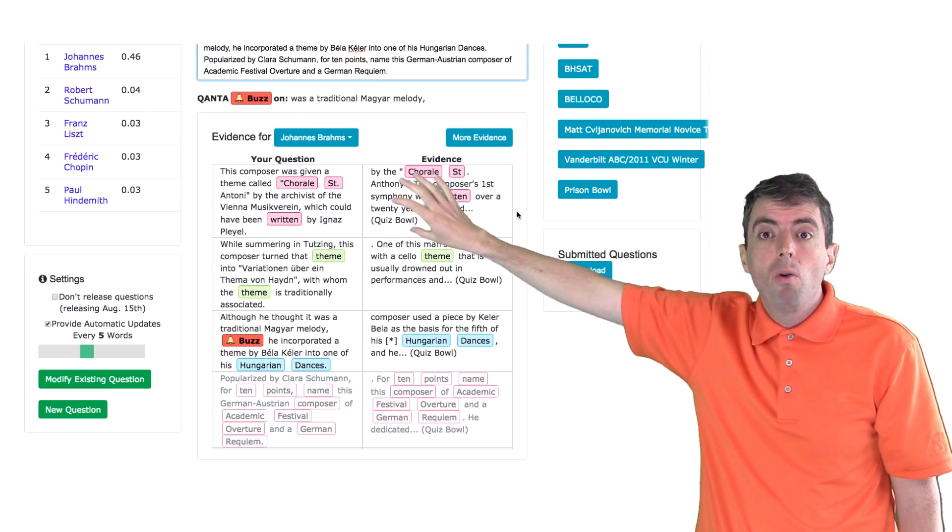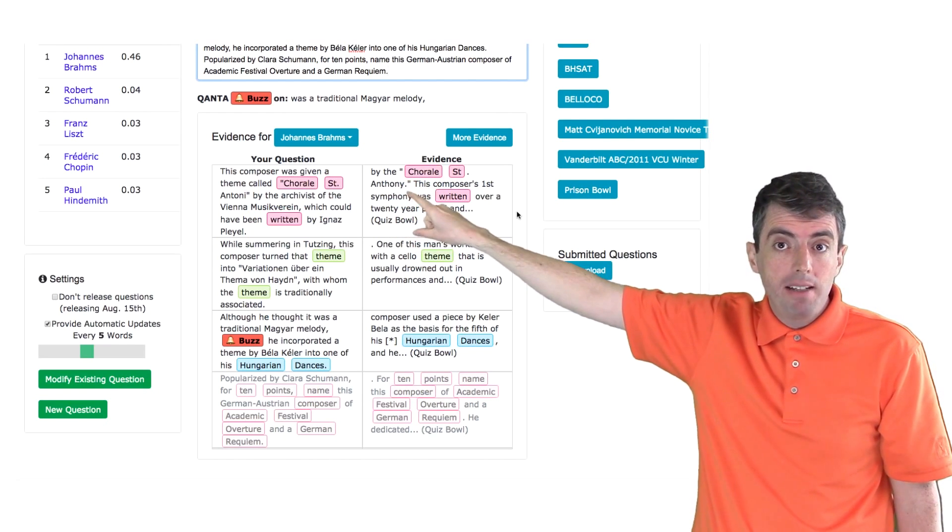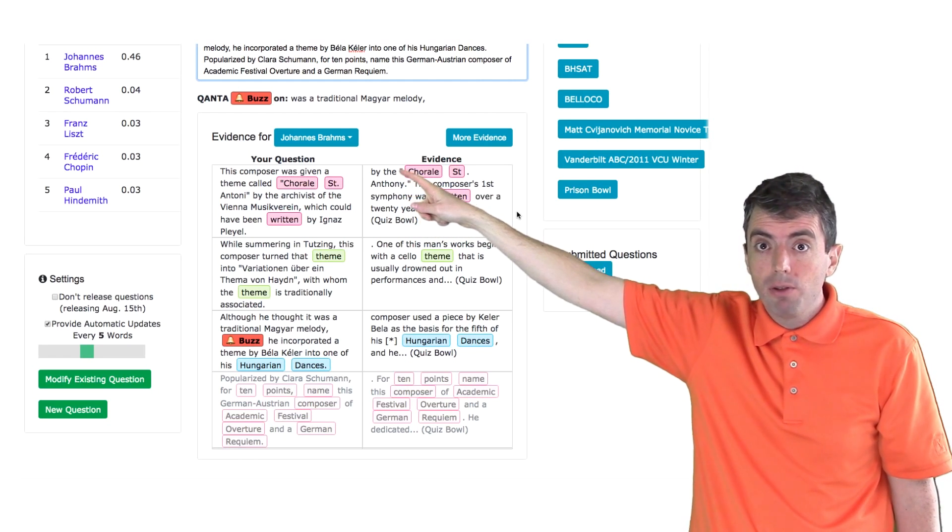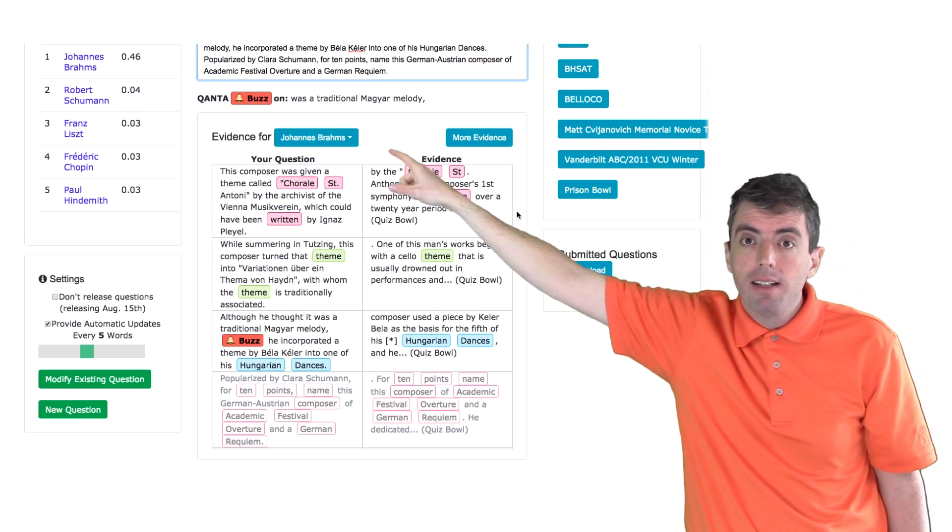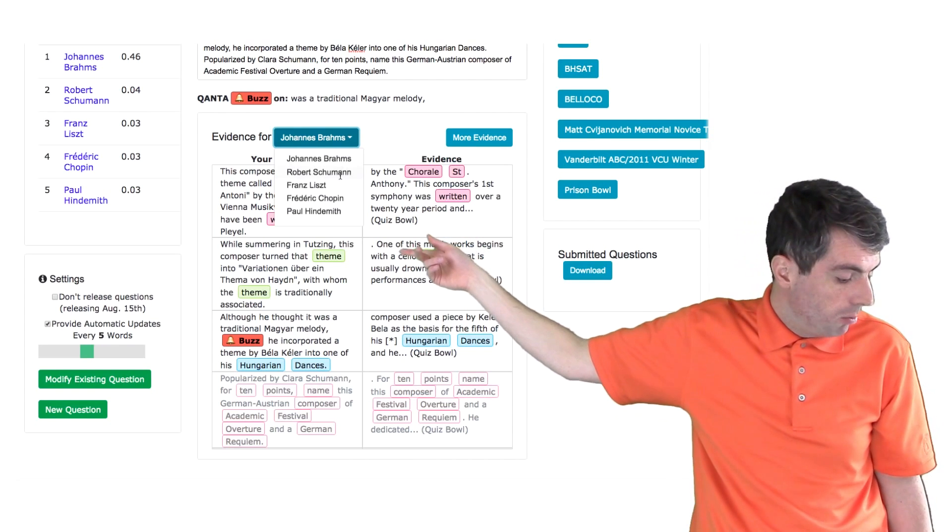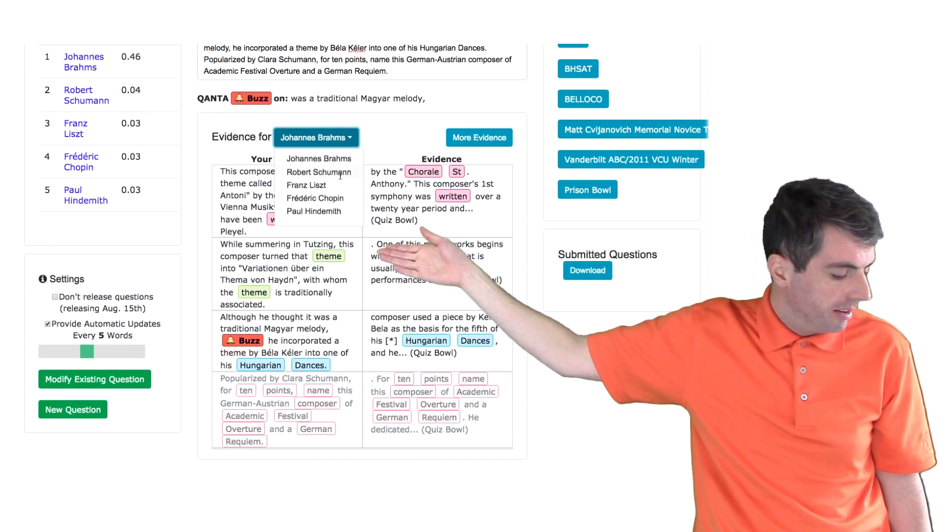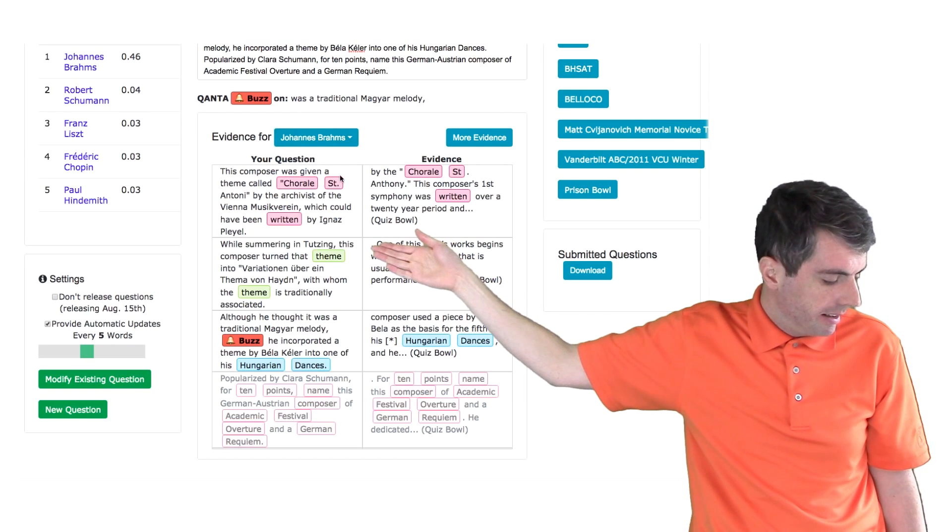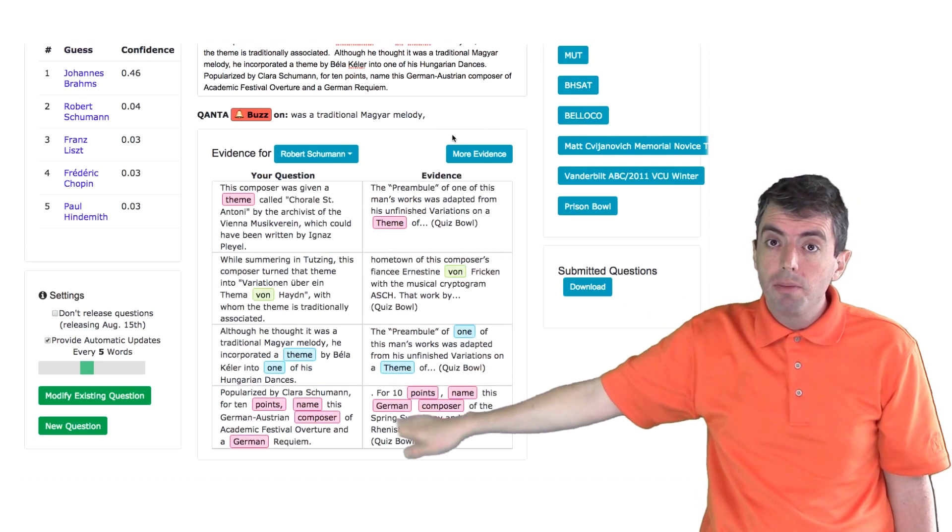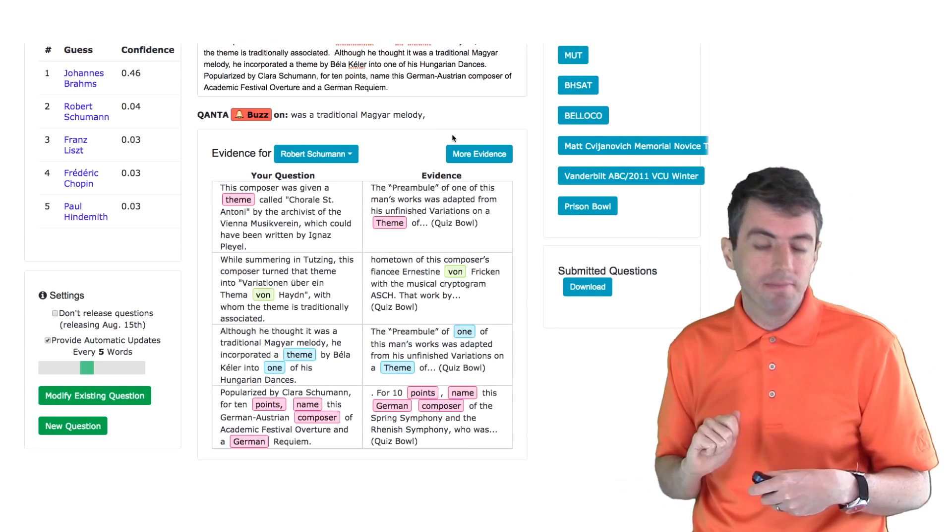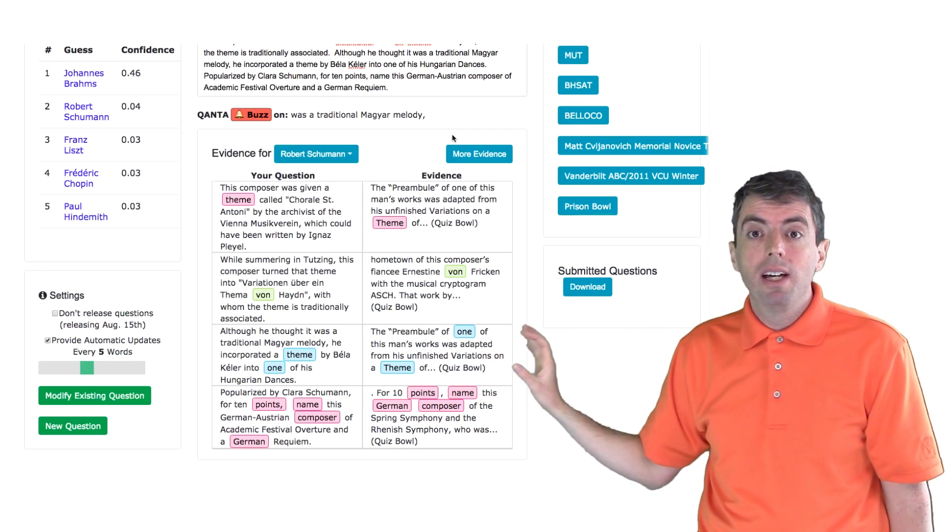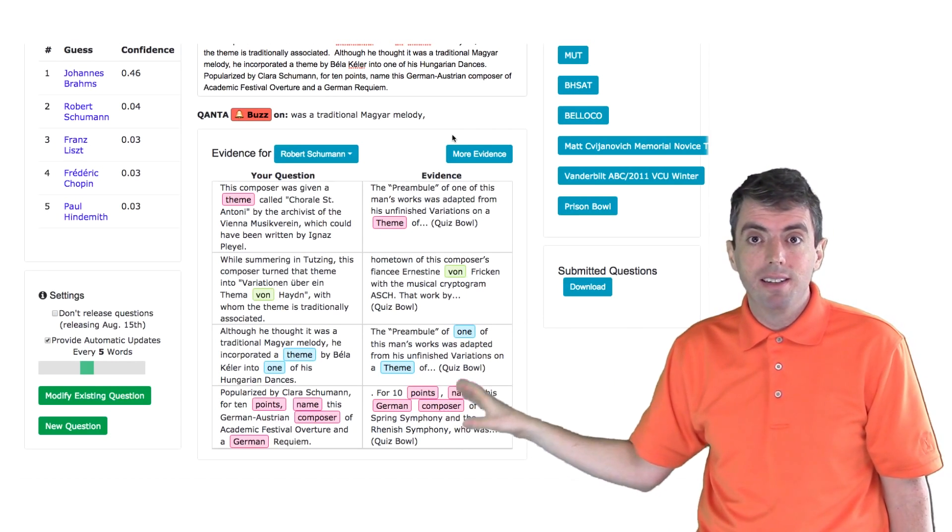If you want to see why it might think another answer might be the answer to this question, you can change what evidence you're seeing it for by clicking on Johannes Brahms there. You have a pull-down menu, and then you can see the other possible options. So, for example, let's see why it might think that the answer to this question is Robert Schumann. And so we can click on that, and we can now see what sort of clues might lead it to think that the answer is Robert Schumann. This can help a question writer avoid unintentionally confusing clues that might mislead the listener of the question.